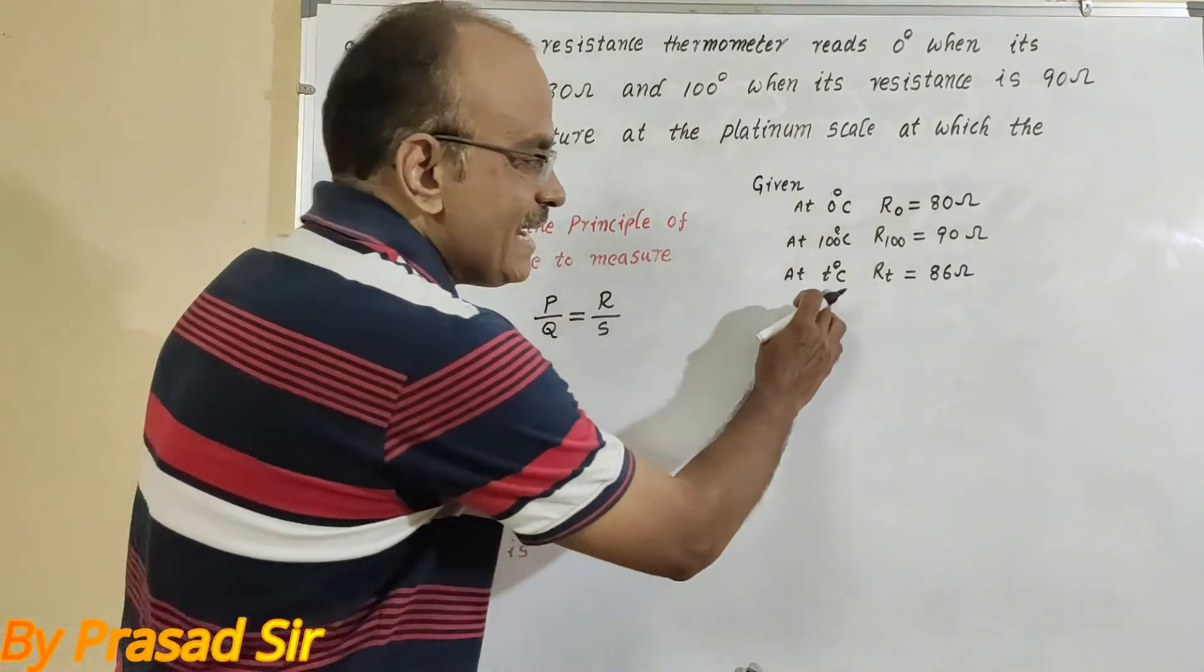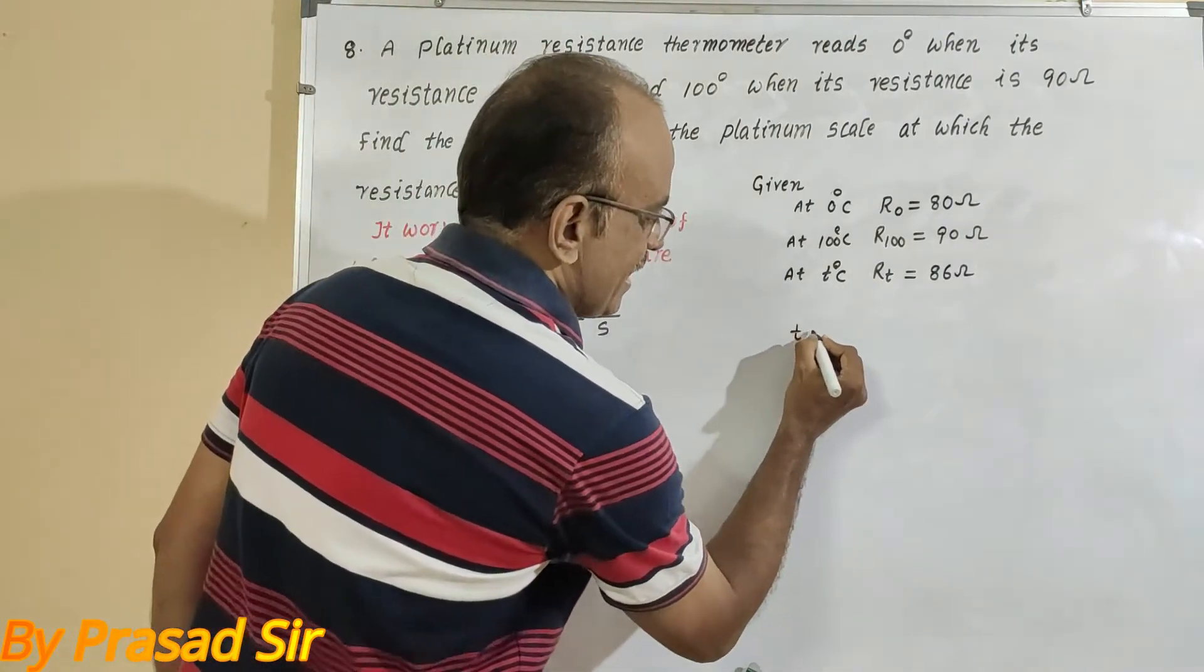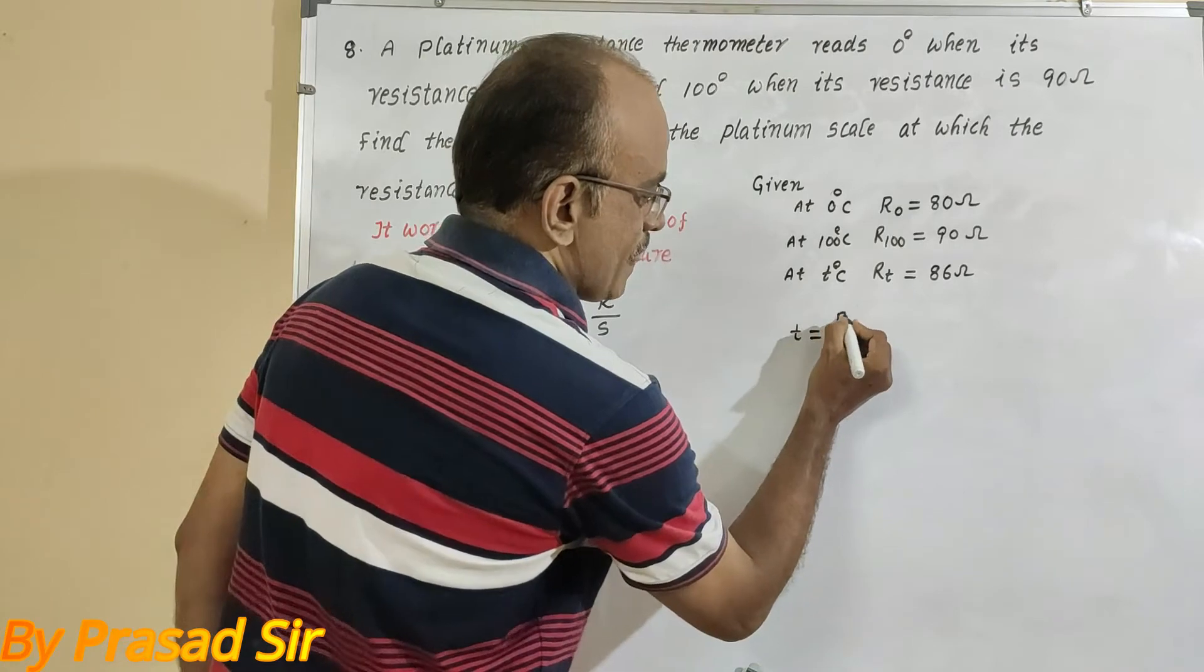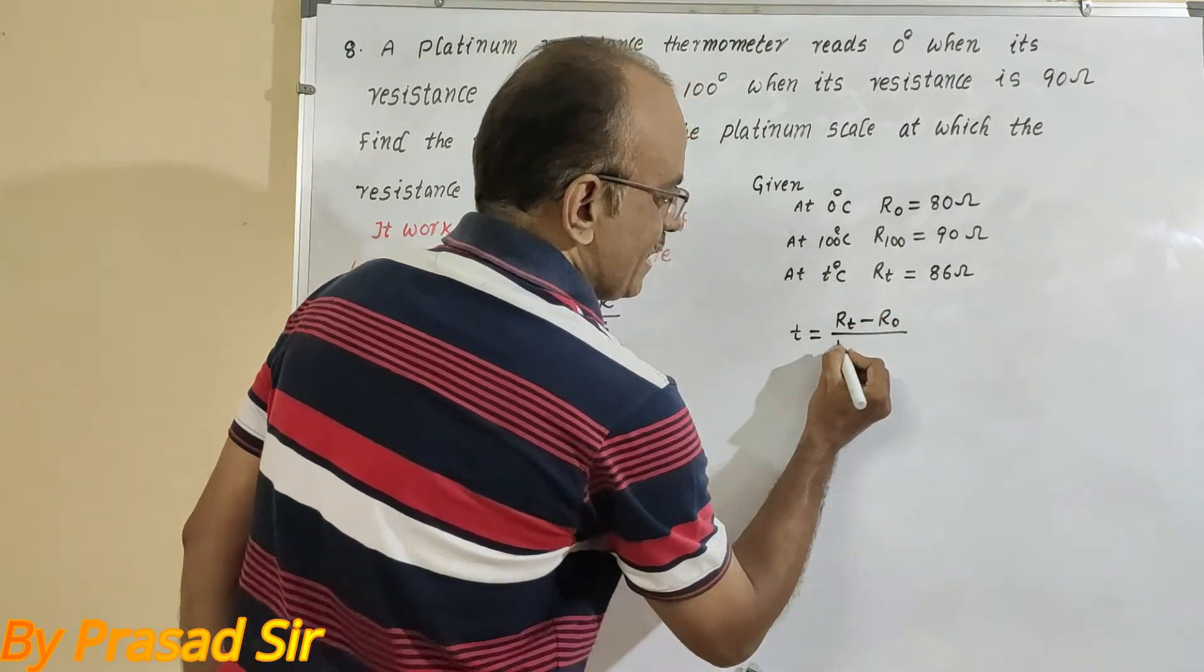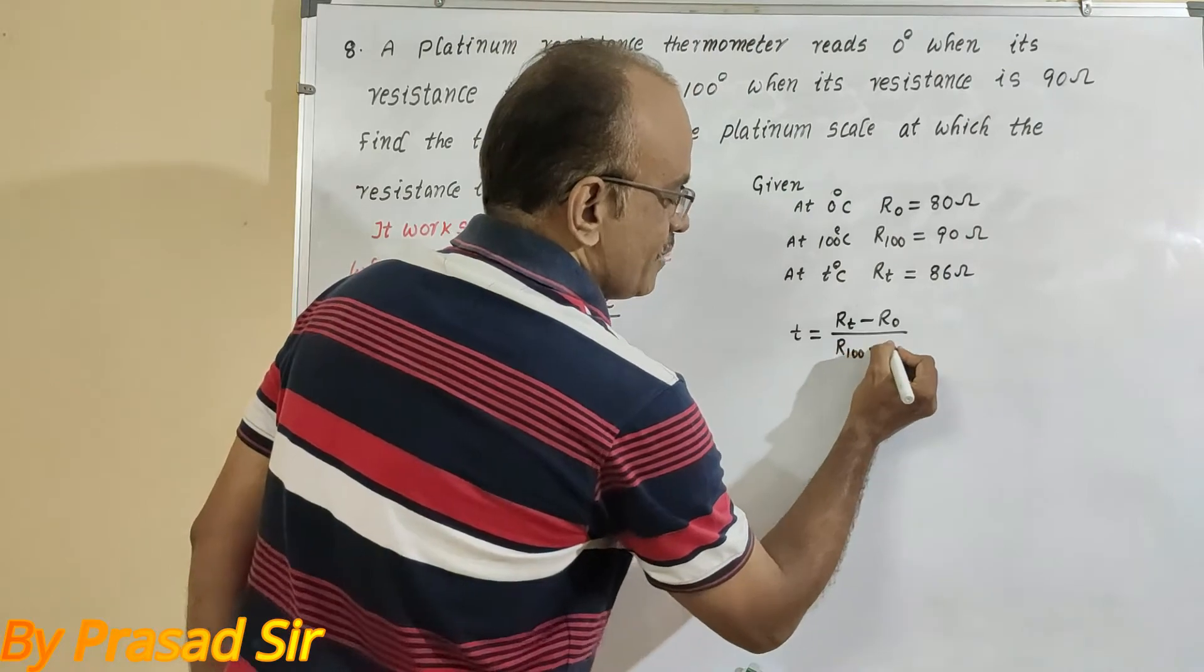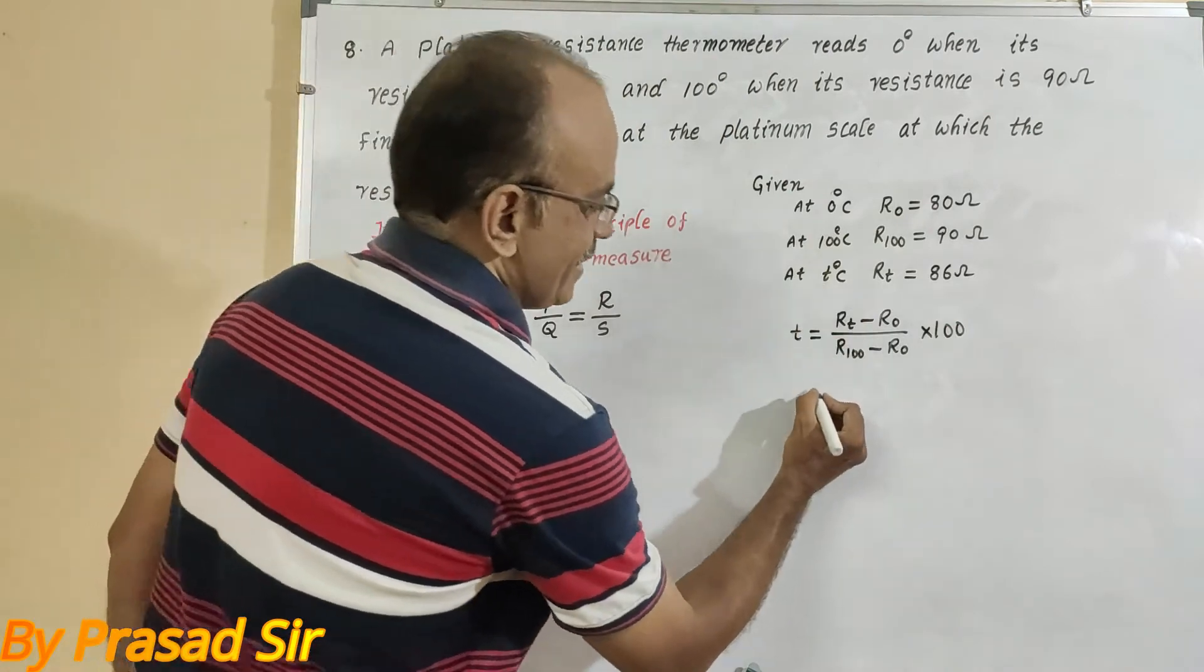So to calculate the T value, we have the formula: T equals R_T minus R_0 divided by R_100 minus R_0 into 100. Now substitute here.